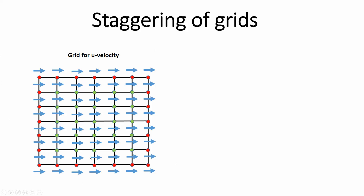I also add one additional row, which I'll explain later. If you count it, the total grid for the U velocity is a 7x8 mesh because of this additional U velocity layer.